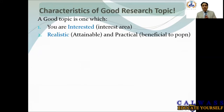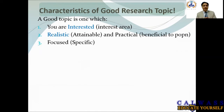The second point is it should be realistic — meaning attainable and practical. By practical, we mean it should be beneficial to the general population. The third point is it should be focused and specific. Whenever you are trying to search for a good research topic, keep in mind that you cannot research everything, so you need to narrow it down.